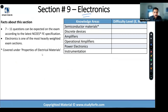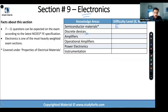Alright, electronics — semiconductor materials we already rated as easy. Discrete devices: we have the Zener diode and the P-N junction diode. So let's just call it diodes. How do we rate diodes? Medium — I agree.